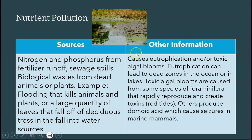Fertilizer runoff, sewage runoff, and feedlot or animal manure runoff all add to nutrient pollution. This causes eutrophication and toxic algal blooms.